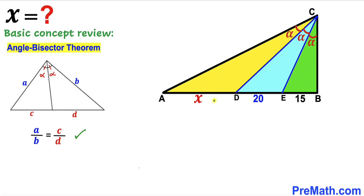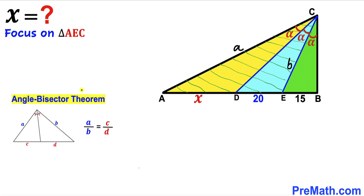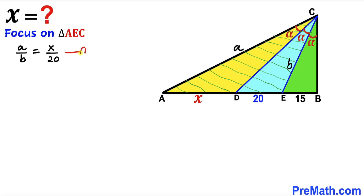Now let's focus on triangle AEC with angle bisector CD, which gives us two congruent angles alpha and alpha. Let's call this side length lowercase a and side CE lowercase b. Applying the angle bisector theorem — with segment AD equal to X and segment DE equal to 20 — we get: A divided by B equals X divided by 20. Let's call this Equation 1.